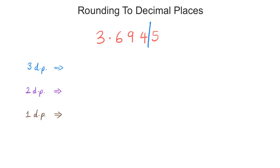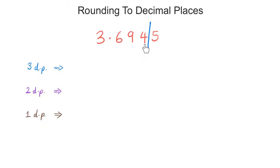If I now round it to three decimal places, you need to see what comes after the line. 5 or more, raise the score. So, after the line there is a 5, we need to raise the score, we need to go higher. Now, imagine this as a whole number, 3,694. What number comes after 3,694? It is 3,695, so this becomes 3.695.